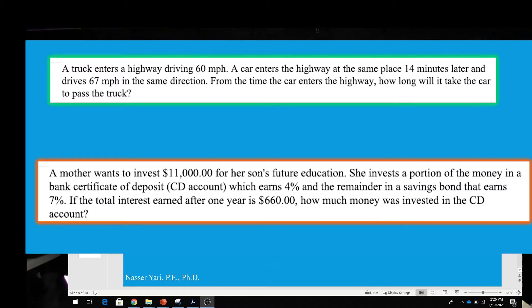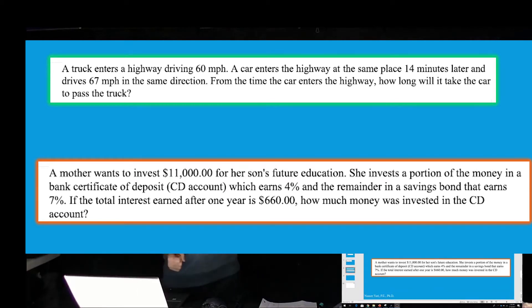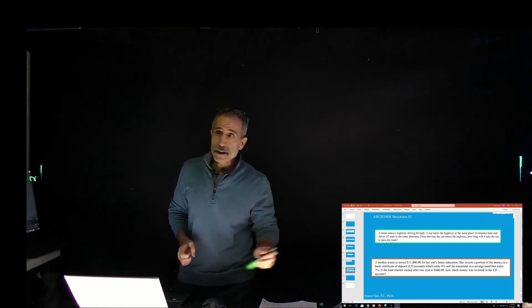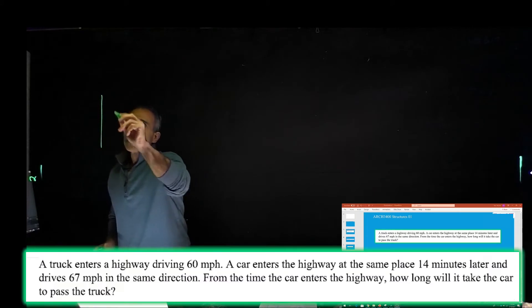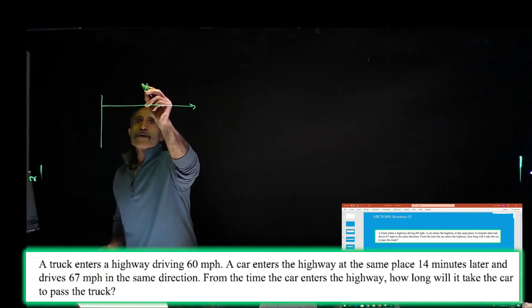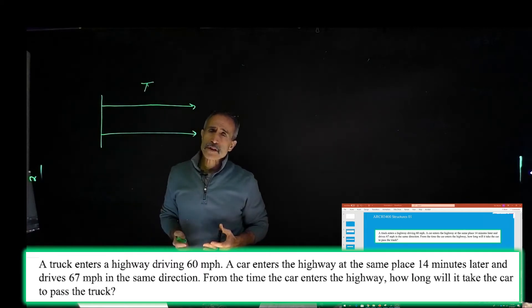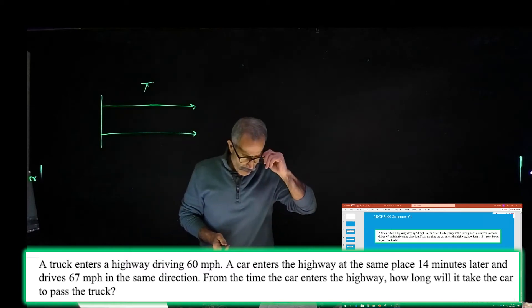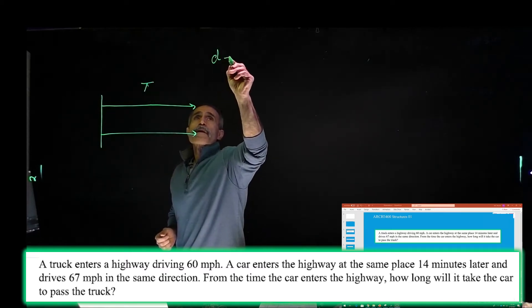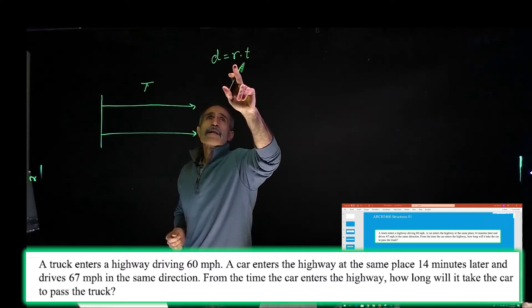It says a truck enters the highway driving 60 miles an hour, and a car enters the same highway from the same spot 14 minutes later, and then it goes driving at 67 miles an hour. How long would it take for the car to pass the truck? Let me bring this up here. We have the highway right here, and the truck is going to go this way. This is the truck going, and the car coming later on. The truck has an advantage of 14 minutes.